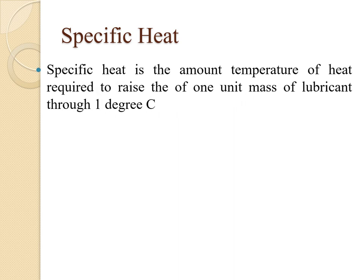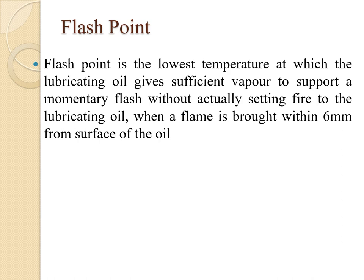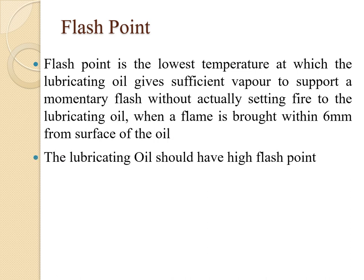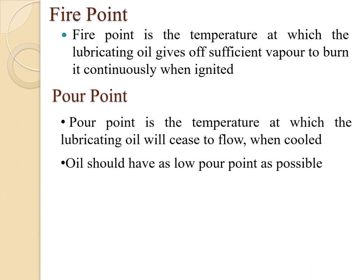In gas film lubrication, variation of density with pressure is significant and must be considered. Specific heat is the amount of heat required to raise one unit mass of lubricant through one degree Celsius; its SI unit is J/kg/°C. It is important because lubricating oil is required to carry frictional heat. Flash point is the lowest temperature at which lubricating oil gives sufficient vapor to support a momentary flash without setting fire when a flame is brought within 6 mm of the oil surface. Fire point is the temperature at which oil gives off sufficient vapor to burn continuously when ignited. Pour point is the temperature at which lubricating oil ceases to flow when cooled; oil should have as low a pour point as possible.